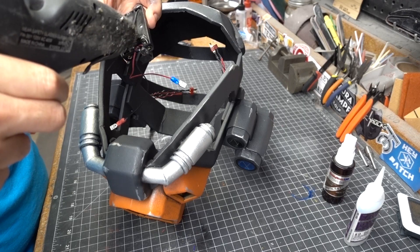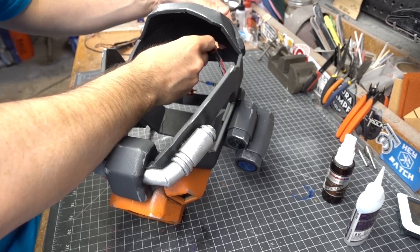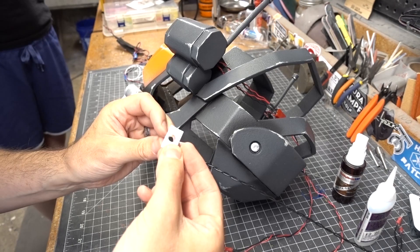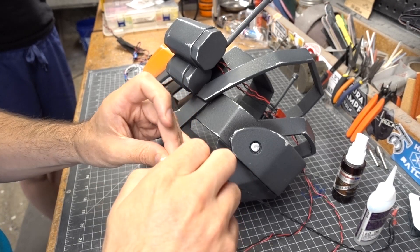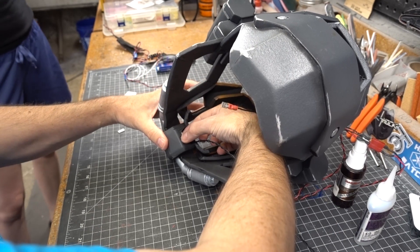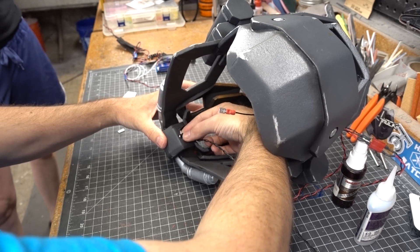I hot glued the battery holder in place on the inside rear part of the helmet. Then the blink switch was screwed into a small piece of styrene plastic and super glued into place near where Brittany could trigger it with her chin.